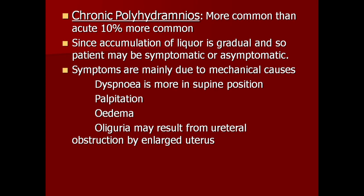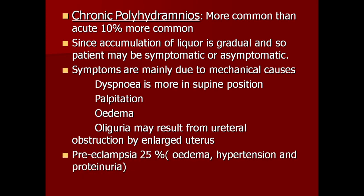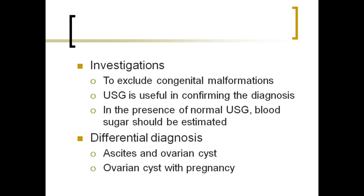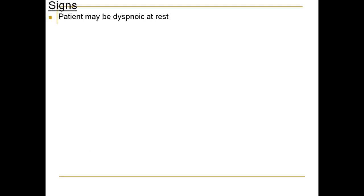Oliguria may result from urethral obstruction by the enlarged uterus. Preeclampsia occurs in 25% of patients. Investigation: first explore for congenital malformation; USG is useful in confirming the diagnosis. Blood sugar should be estimated. Differential diagnosis includes ascites and ovarian cysts. Signs and symptoms to address include dyspnea, pedal edema, and evidence of PIH.